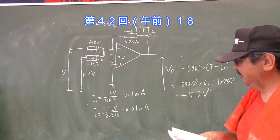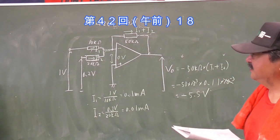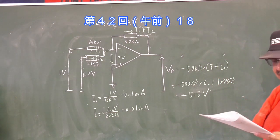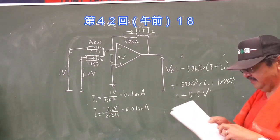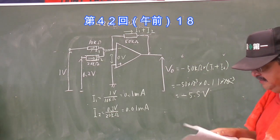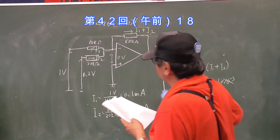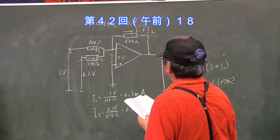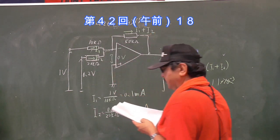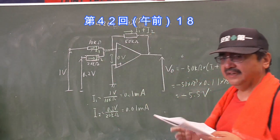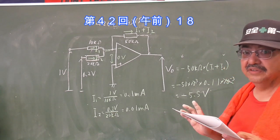イコールマイナス5.5Vになります。一応ね計算上はこうなります。で次問題の19番ですね。